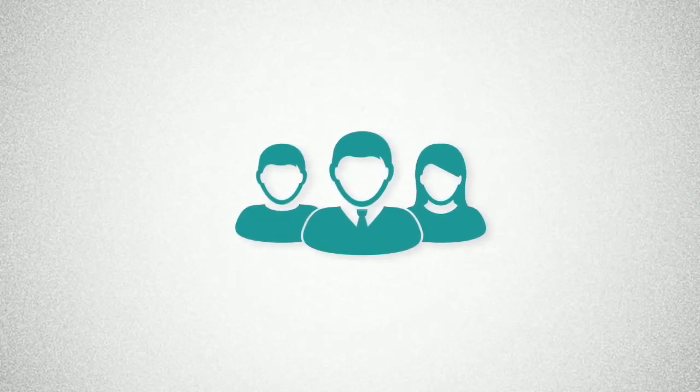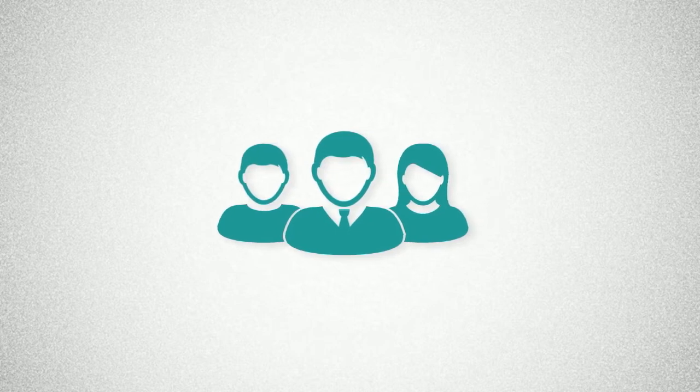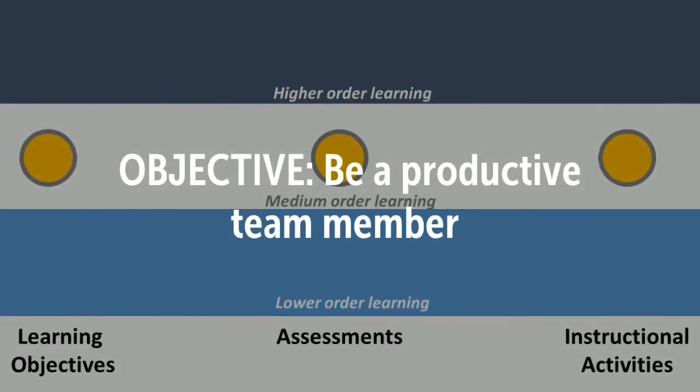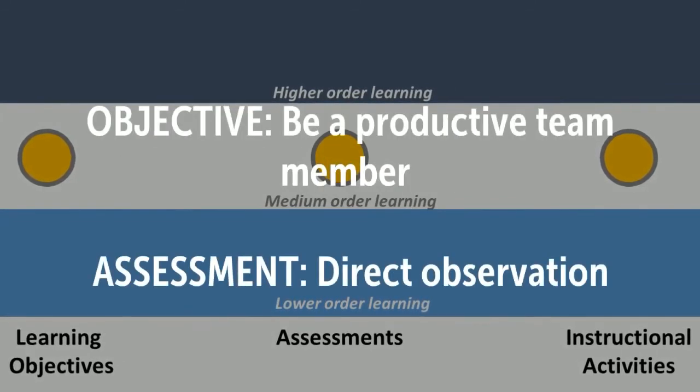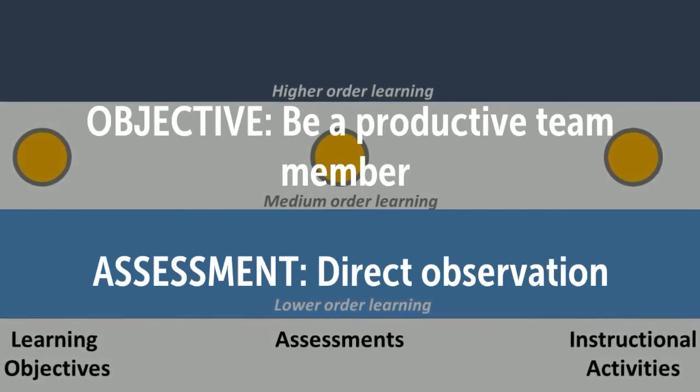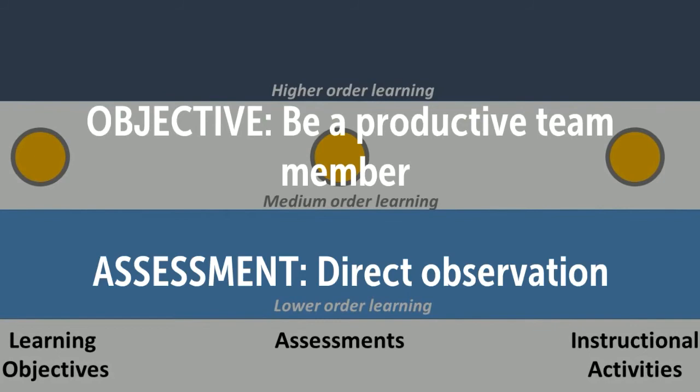Maybe your objective is not cognitive, but behavioral, like to improve team skills. Your objectives state that you want to develop team skills in students. You may assess them through direct observation of these behaviors, maybe using a rubric or peer evaluations from the team members.